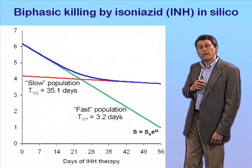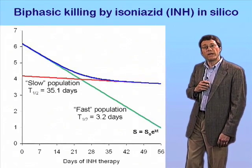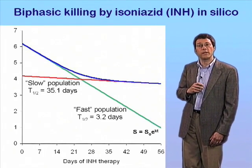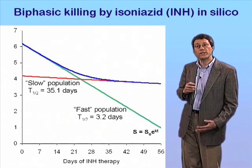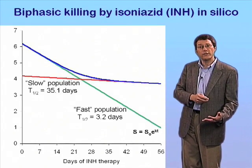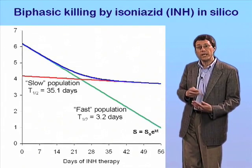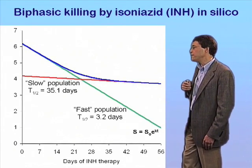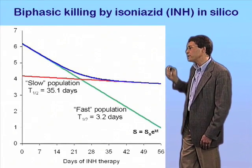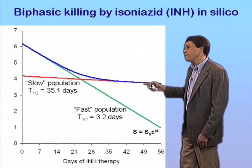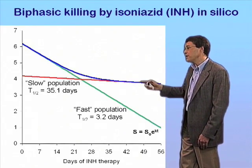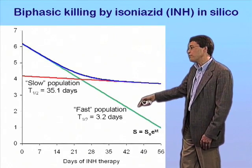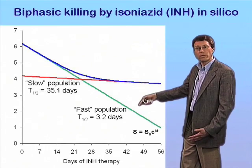We can postulate that the reason for these biphasic kinetics is due to the existence, as Mitchison proposed, of a dormant subpopulation of bacteria that is killed with slow kinetics compared to the bulk bacterial population. If we perform a simple mathematical model in silico for this process, on the basis of differential killing dynamics of a fast population — a population that's killed with rapid kinetics — that represents the bulk of the bacteria,